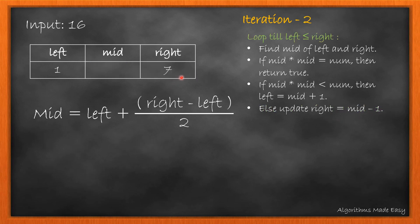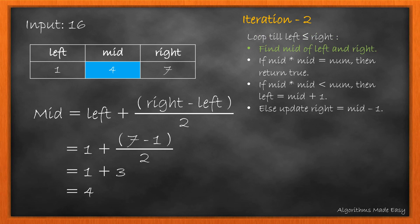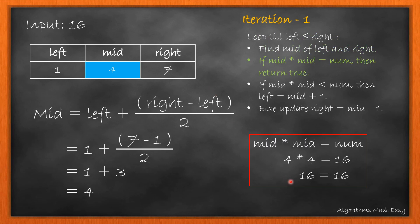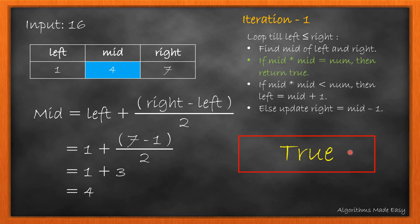We will again check the looping condition for iteration 2. As it is true, we move ahead. We will calculate the mid. We will check if its square is equal to num. As it is equal, we will return true.